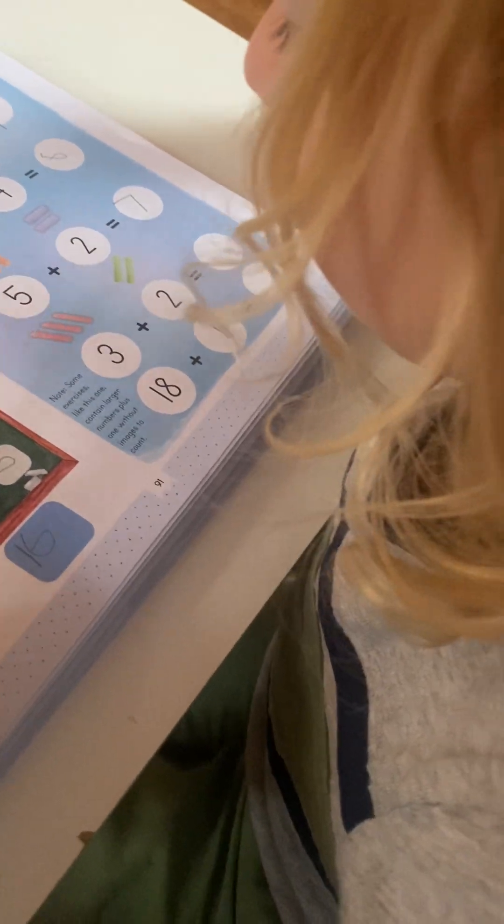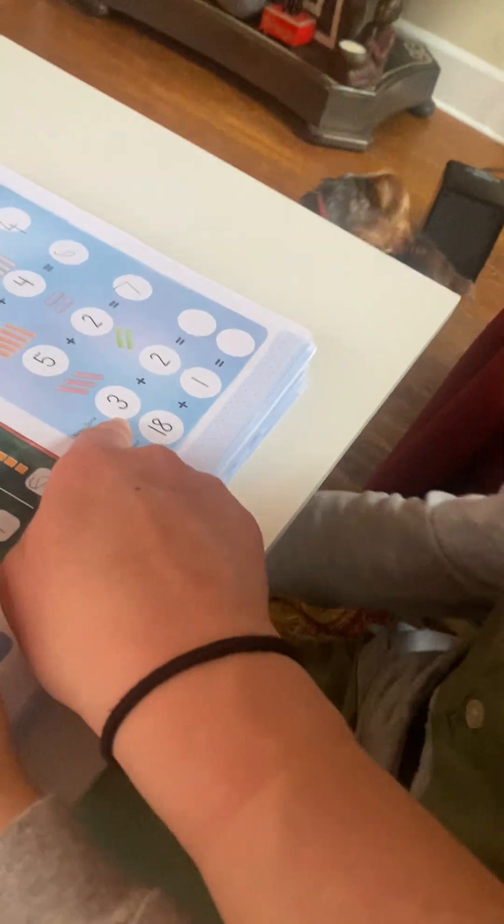And three chalks plus two chalks is six chalks. Three plus two, let's count it carefully. Let's count the chalks carefully. Oh, you're right here, you already did that one. Three chalks plus two chalks is where you're at. I see why you got confused.